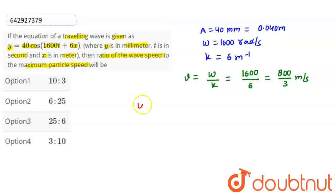Now, the maximum particle speed Vp max is omega multiplied by amplitude A. So omega is 1600 and amplitude is 0.04, which gives us 1600 times 0.04 equals 64 meter per second.